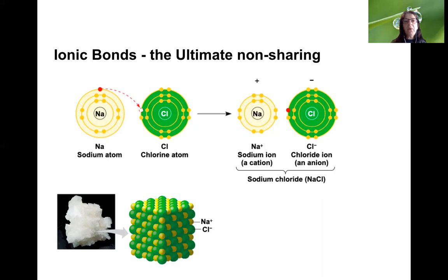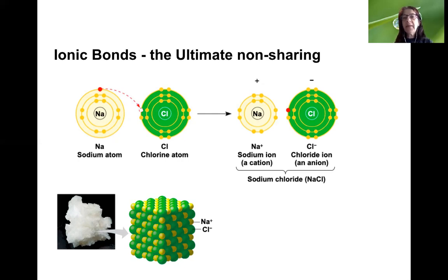Chlorine literally steals sodium's electron. The chlorine ion — it's no longer an atom, it's a charged particle — will have one extra electron, meaning one more electron than protons in the nucleus, giving it a single negative charge. The sodium ion is now missing one electron, so it has one fewer electron than protons in the nucleus, giving it a net charge of plus one. In both cases, the ions are happy because their outer valence shells are completely filled. Because sodium is positively charged and chlorine is negatively charged, they will strongly attract each other.